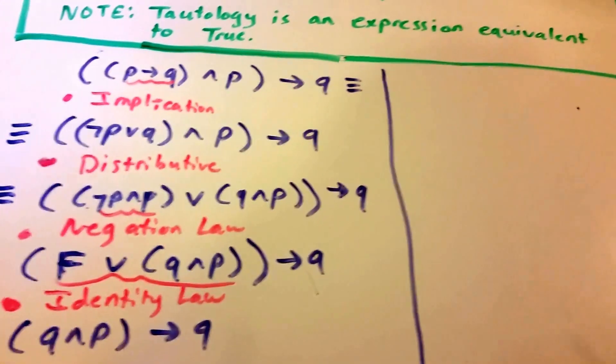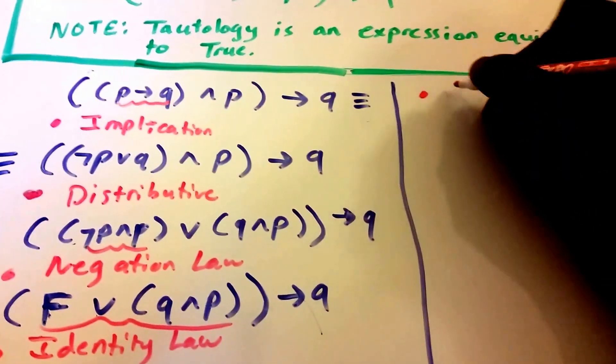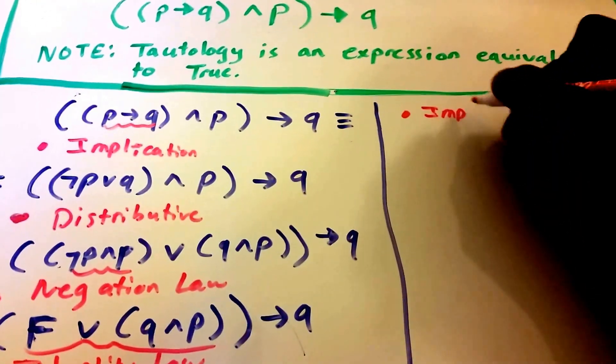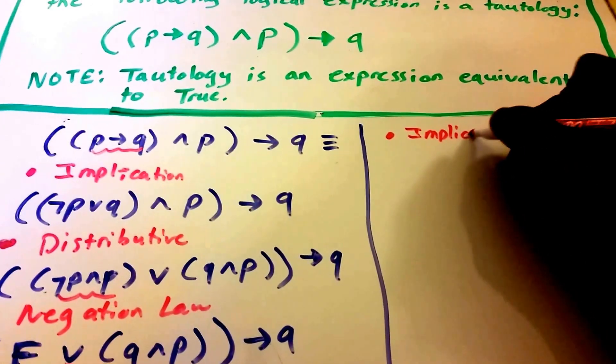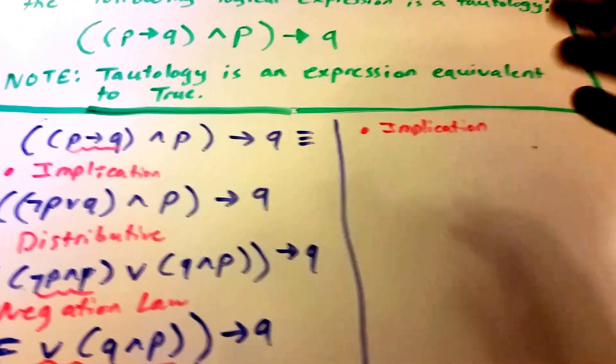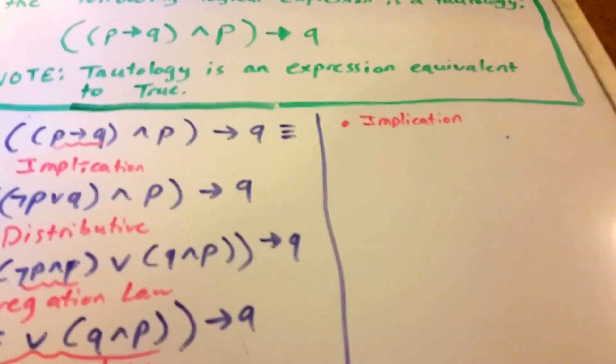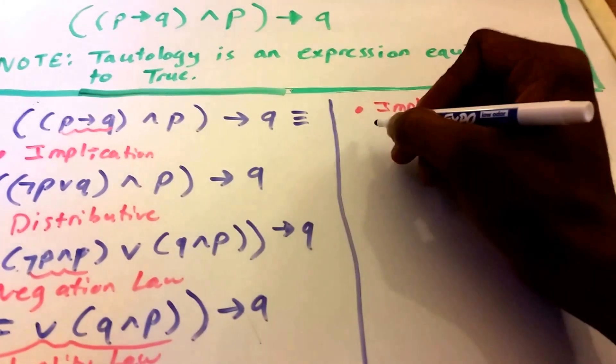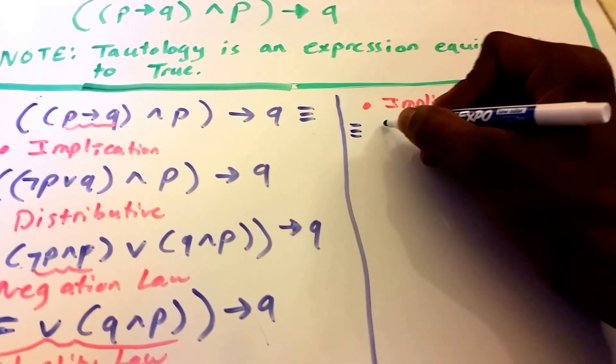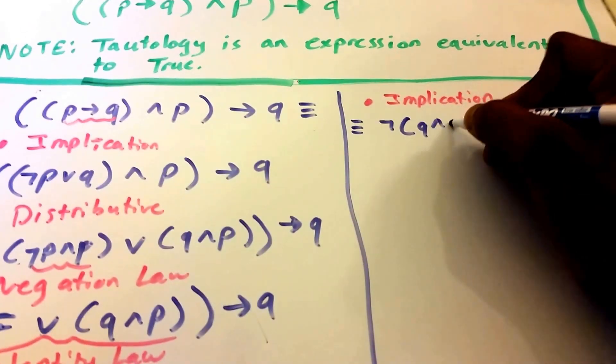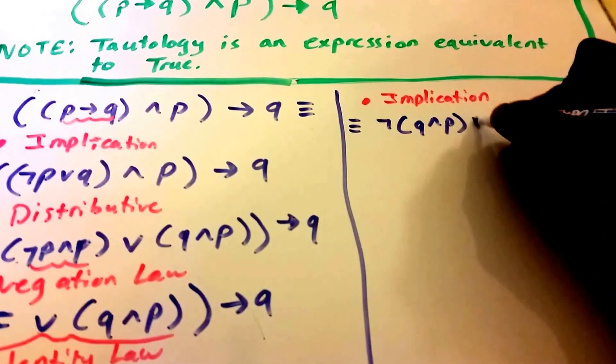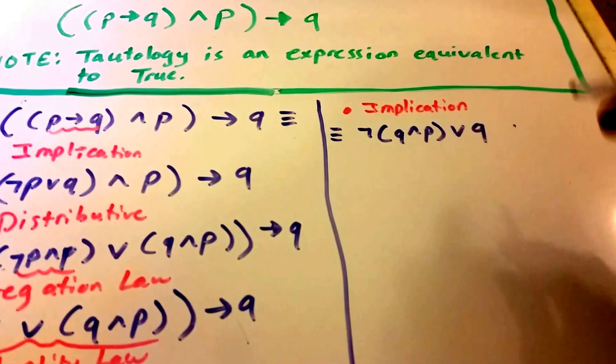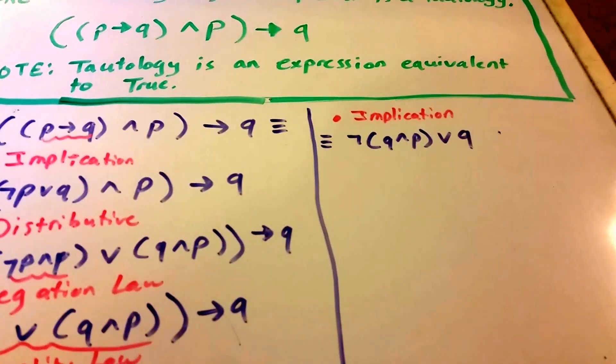So what we probably want to do now is use the implication definition. Implication. So what we get now is not Q and P or Q.